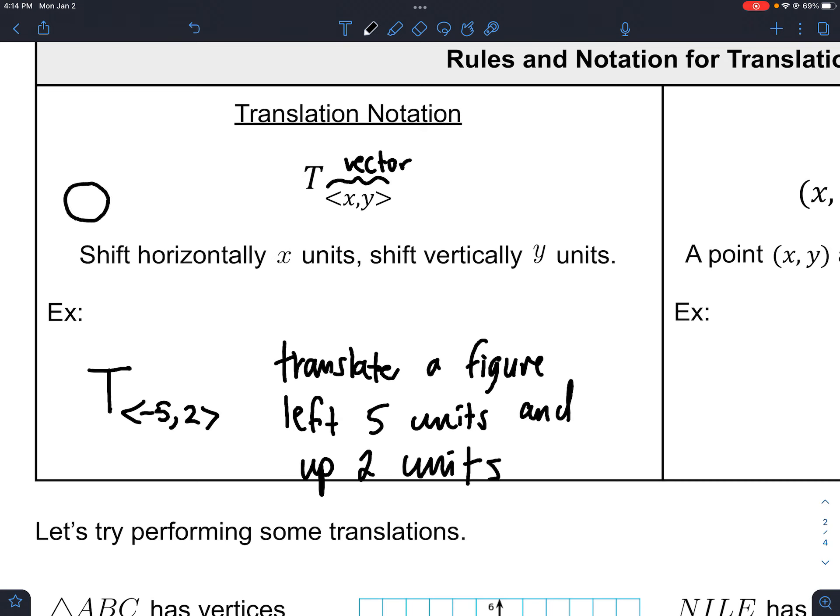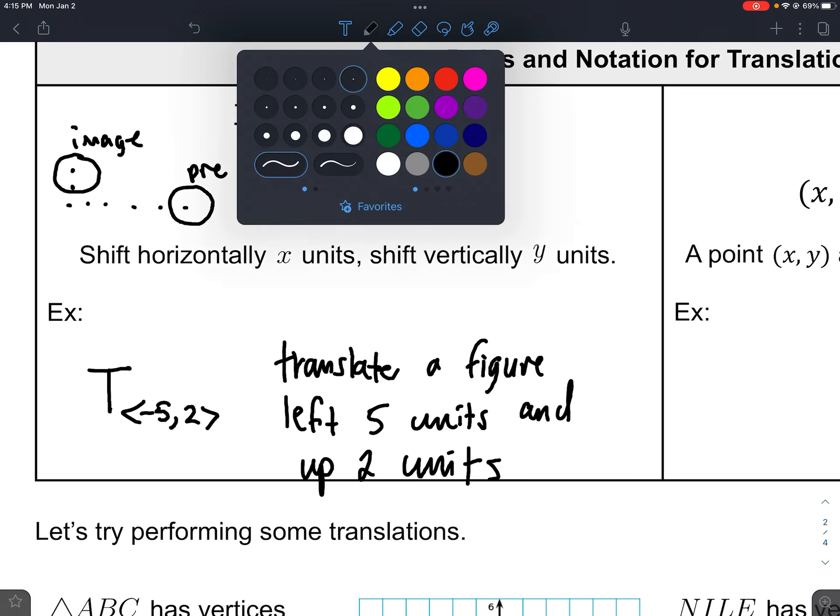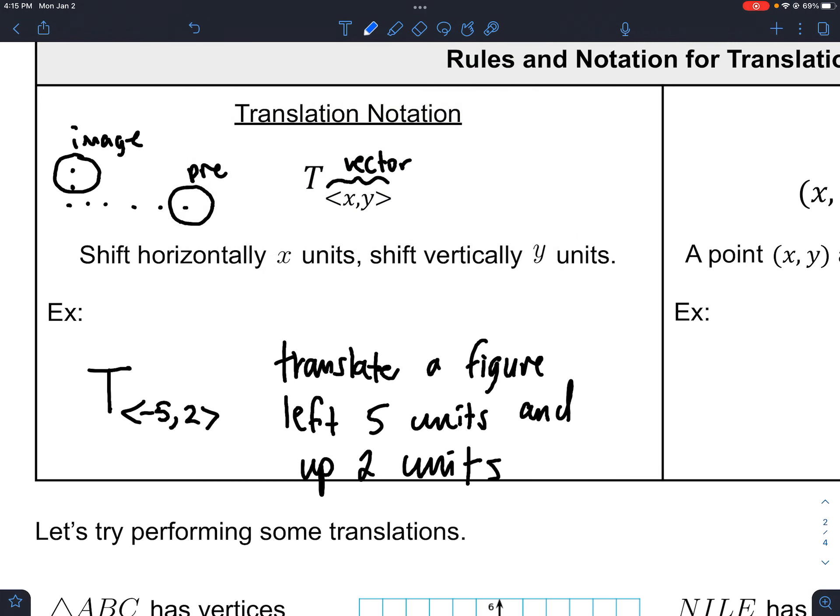So if we had a figure here and a figure here, this is our pre-image and this was our image. We're going to go left 5 and then up 2. So it's really just a vector or an arrow that shows the change.